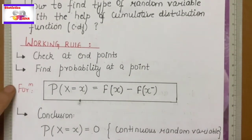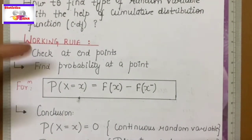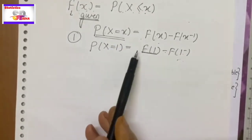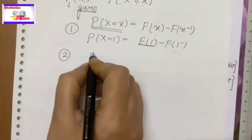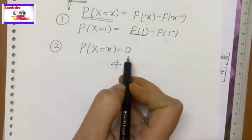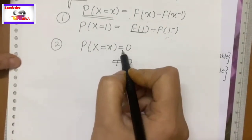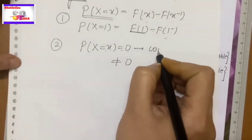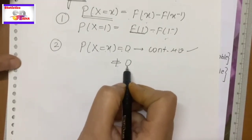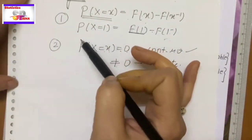I am pointing out that this is a lecture covering all the key points in short notes. Now let's implement this working rule onto some questions. What should be the first rule? If you see a question where the CDF is given, find the probability at a point. Second, check whether that probability at a point is 0 or not equal to 0. We have discussed this before when we covered the properties of types of random variables. At a point, if the probability is 0, we determine the random variable is continuous. If at a point its value is not equal to 0, then the random variable is discrete. So this is trick one: in any question, first we need to determine the probability at a point.